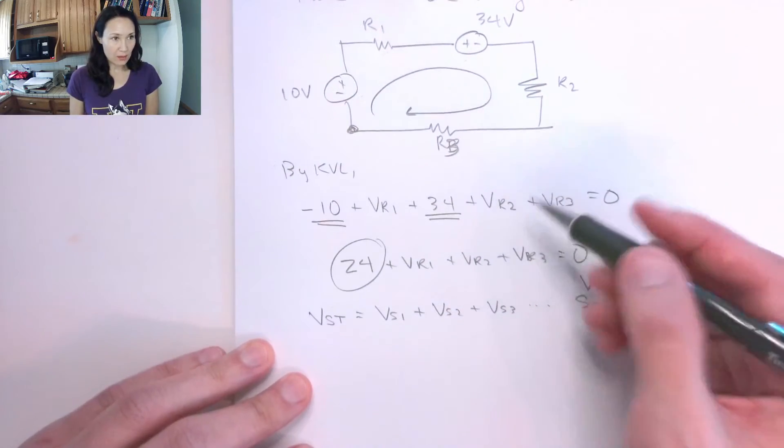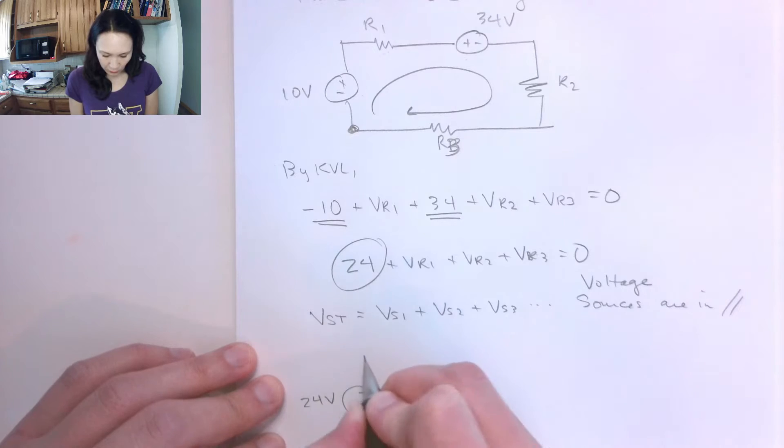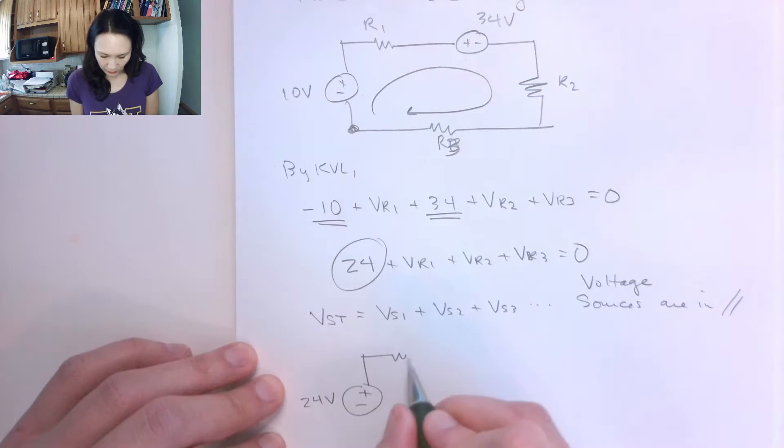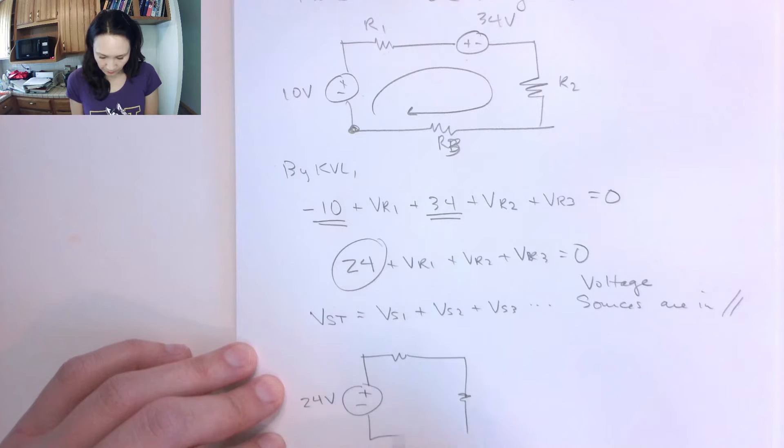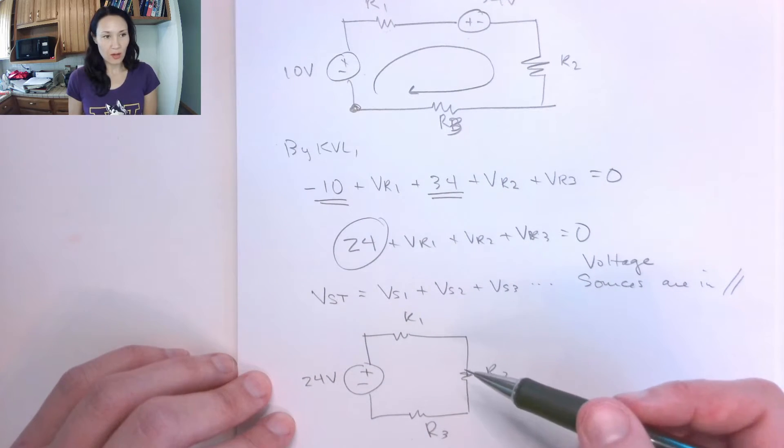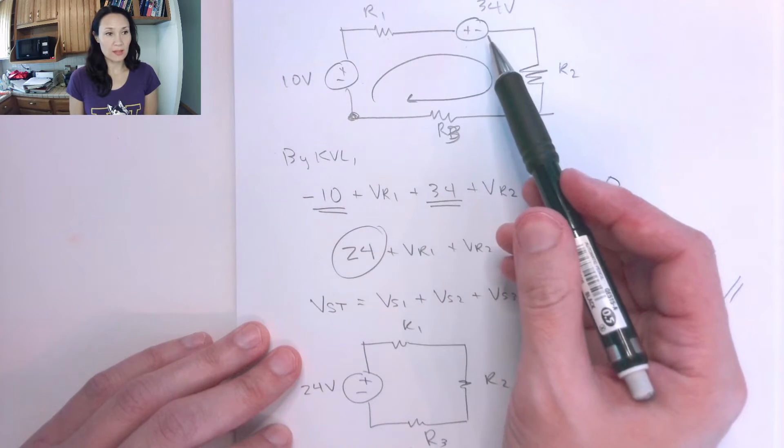So I can actually rewrite this circuit as containing one voltage source with a value 24 volts, and then I don't have to write this voltage source here, I would just have R1, R2, and R3. So this circuit can actually simplify to this circuit here, as long as the voltage sources are in series like this.